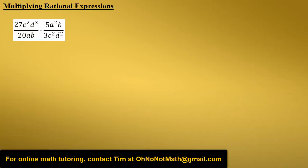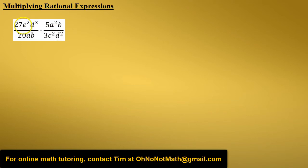Multiply the rational expressions 27c²d³ over 20ab times 5a²b over 3c²d². We're going to multiply the numerators together, multiply the denominators together, and then simplify.